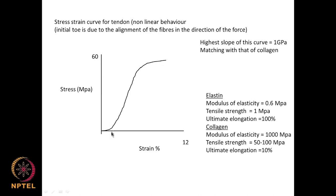Why does this happen? This happens because the fibers get aligned when you apply a force in the direction of the force. That is why we do not see much tension initially, but beyond a certain strain you see the normal elastic behavior.